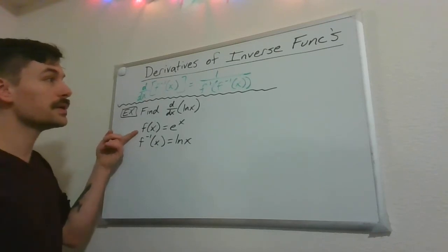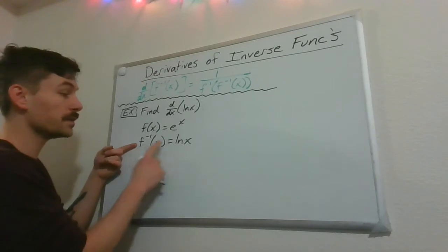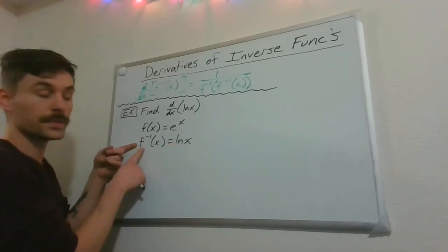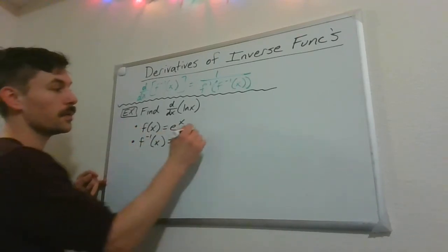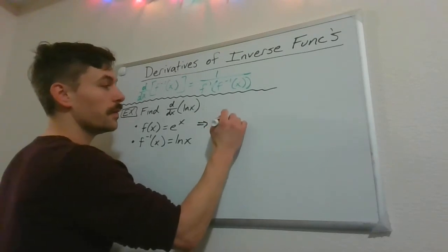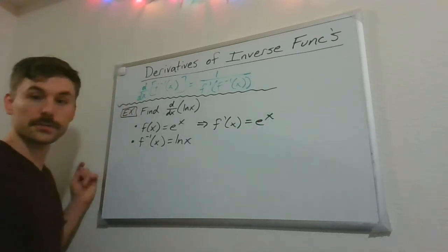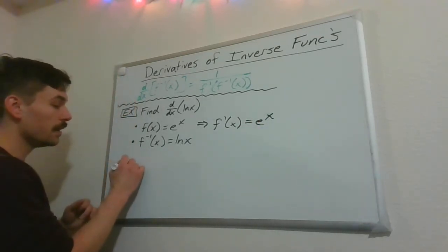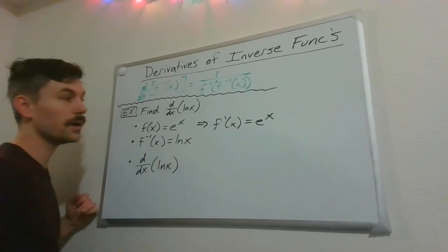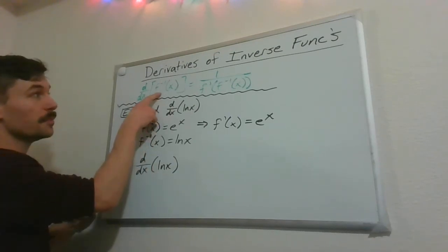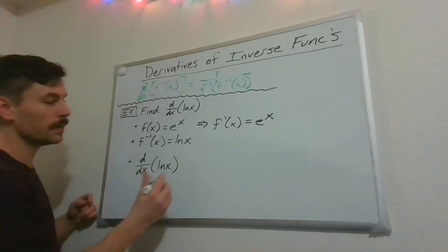So we can write it this way: let e to the x be the original function, because we know how to find its derivative. The function we want to know is our inverse, so f inverse of x is log of x. We start with that orientation, and of course one of our greatest properties is that f prime of x in this case is just e to the x — e to the x repeats itself. So let's find the derivative of log of x.